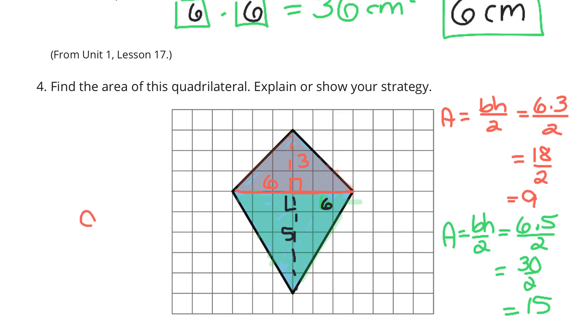And so, if we take our 9 from the top triangle and add it to the 15 from the bottom triangle, we get an area of 24 square units as our solution for that quadrilateral.